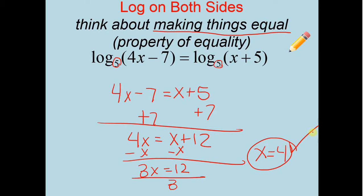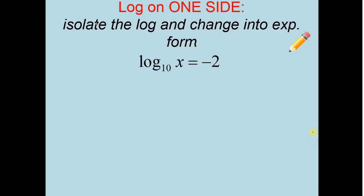You're going to get the same answer. So always kind of be careful with that. Always check your answers. Log on one side. Isolate the log and change it into exponential form. So kind of like when we had exponential on one form, we changed it to log. We're going to go opposite of this. Notice how you can't get to this x right now. Because log base 10 of x. So you're going to want to go to exponential form because your log's alone.